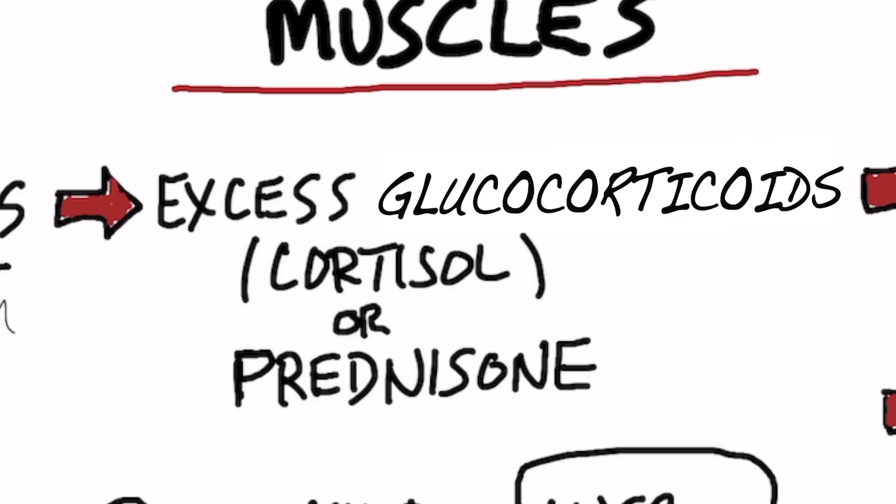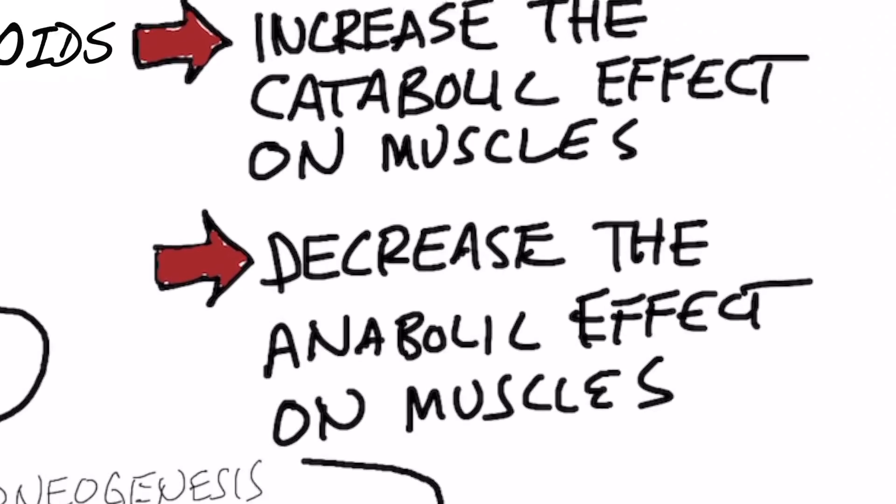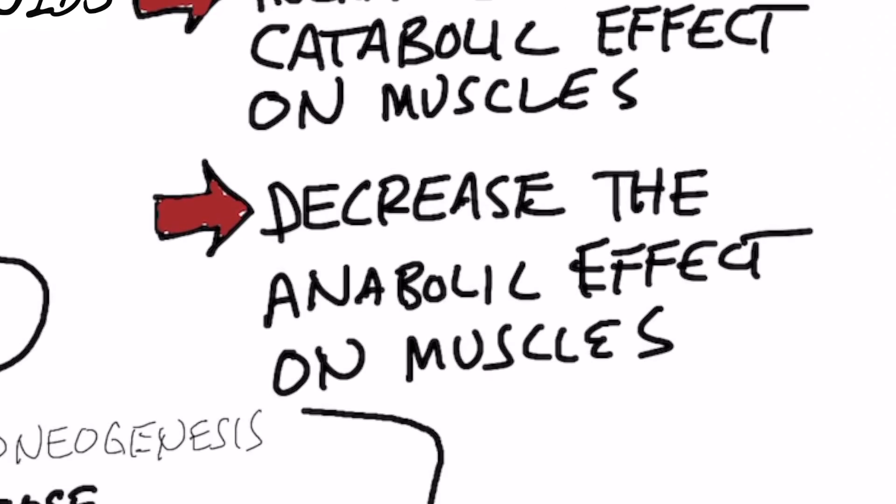There are two primary effects that happen with the muscles. Number one, you have this increased catabolic effect — catabolic means a breakdown of something — so we're getting a breakdown of muscle protein. And number two, you have this decrease of the anabolic effect of the muscles, meaning you're not going to build the muscles back up or make new muscle.